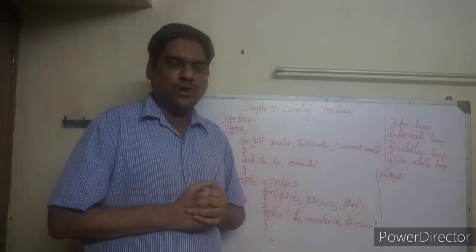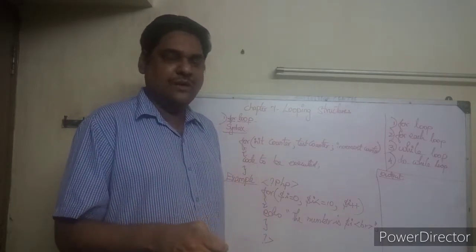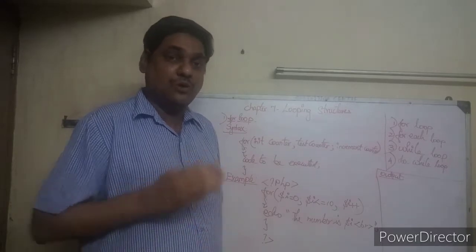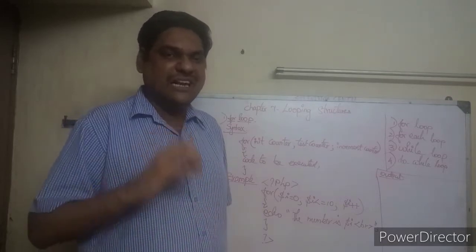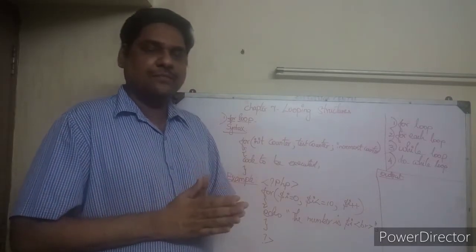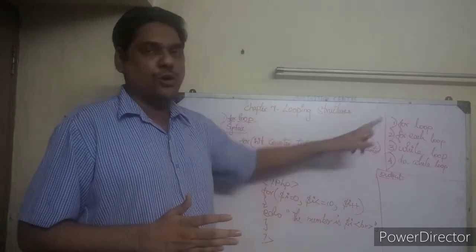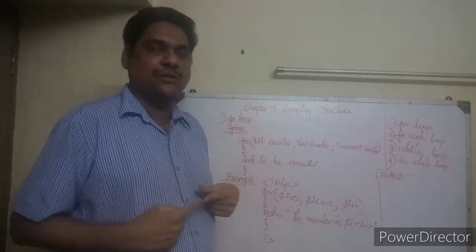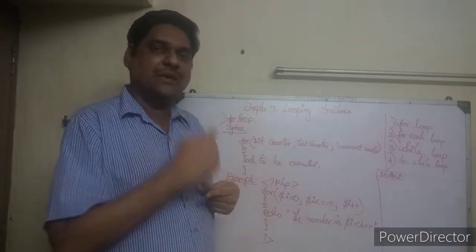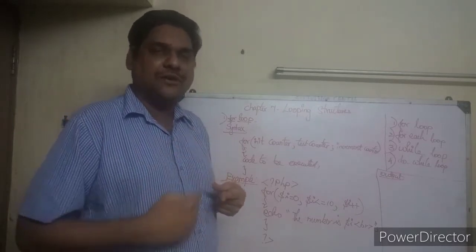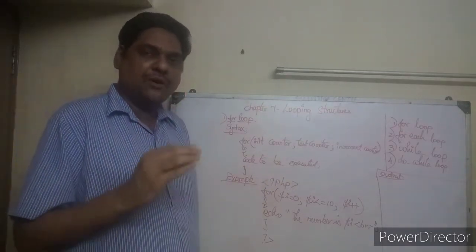For loop is used when you want a set of code to be repeated for a fixed number of times, or a predetermined number of times. You know exactly — five times, seven times, or ten times. The first time the loop executes, it is called the first iteration; the second time is the second iteration; the third time is the third iteration, and so on.